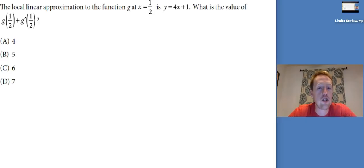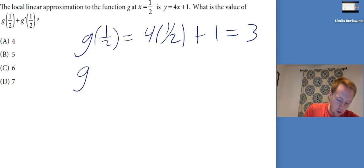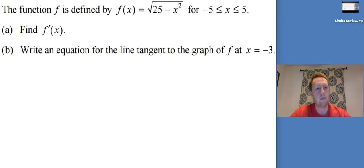Let's see what it looks like. The local linear approximation of the function G at X equals 1 half is Y equals 4X plus 1. What is the value of G of 1 half plus G prime of 1 half? Well, G of 1 half, I should be able to get by just plugging 1 half into this line because they made the tangent line at that value. So G of 1 half is just going to be 4 times 1 half plus 1, which is 3. G prime of 1 half should just be the slope of the tangent line at this value. Well, the slope of this line is 4, I can see. So if I add these together, I get 7. So again, this G prime of 1 half came from this 4 right here, the slope of the tangent line.